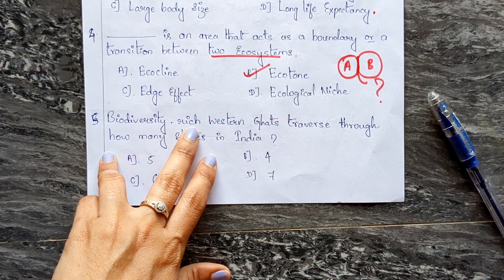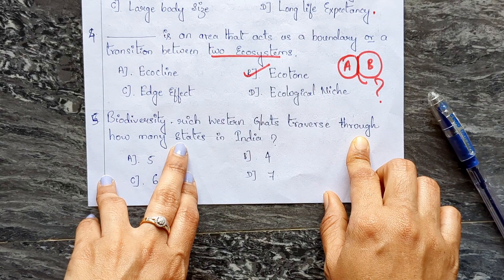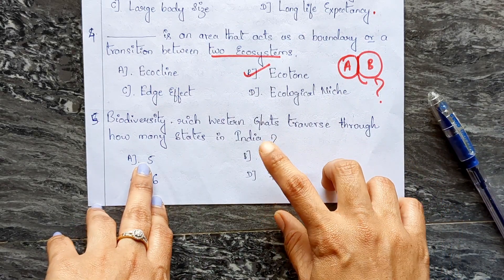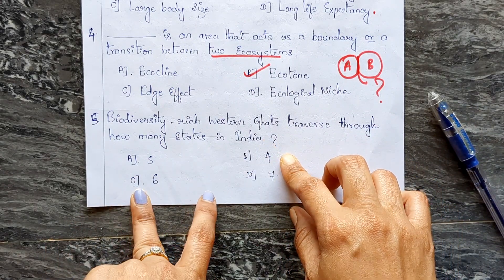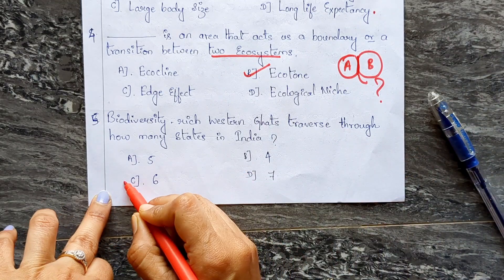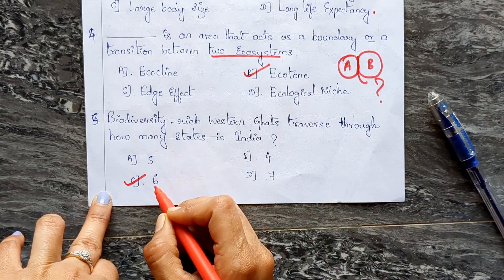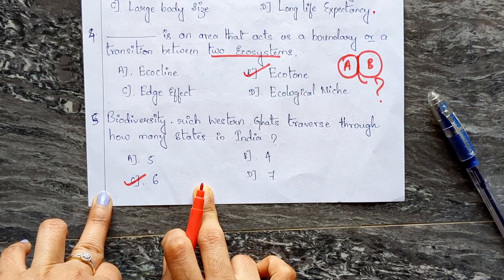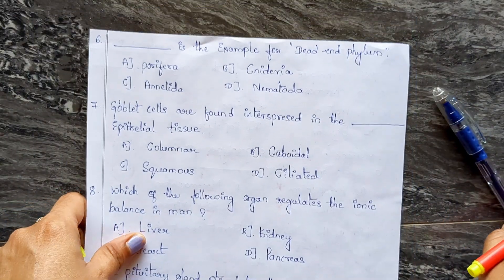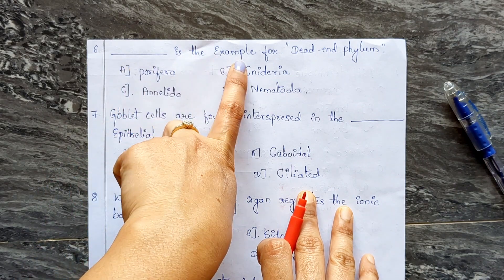Question five: biodiversity-rich Western Ghats travels through how many states in India? Options: A) five, B) four, C) six, D) seven. The correct answer is C — the Western Ghats travel through six states in India.